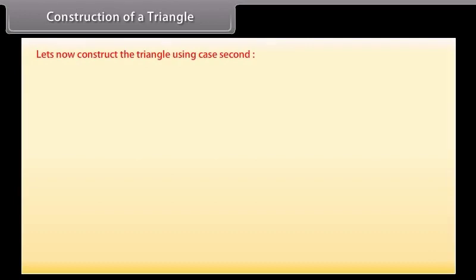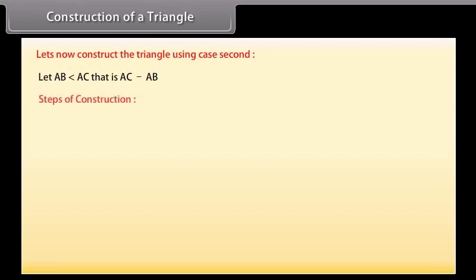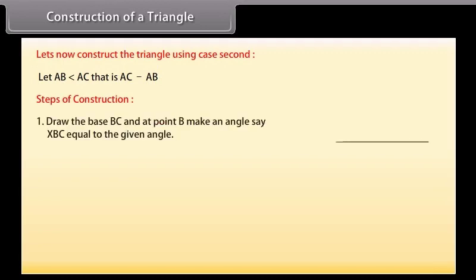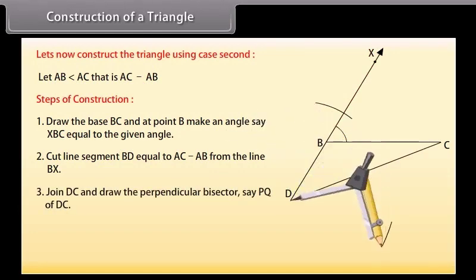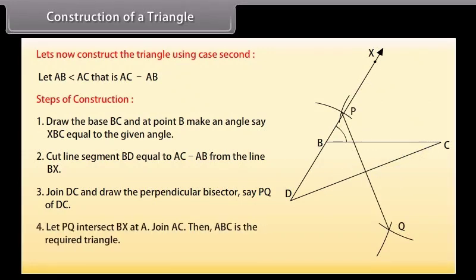Case 2, when AB is less than AC, i.e., AC minus AB is given: Draw the base BC and at point B make an angle XBC equal to the given angle. Cut line segment BD equal to AC minus AB from ray BX. Join DC and draw the perpendicular bisector PQ of DC. Let PQ intersect BX at A. Join AC. Then ABC is the required triangle.